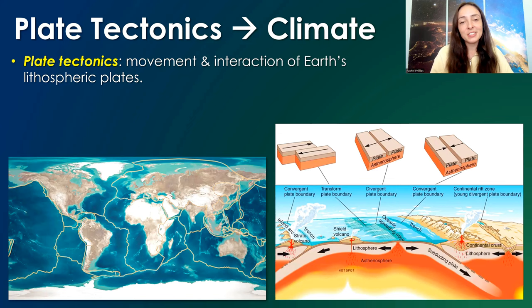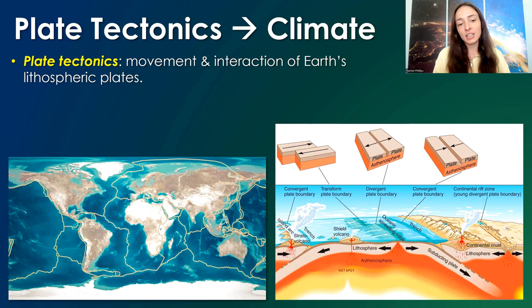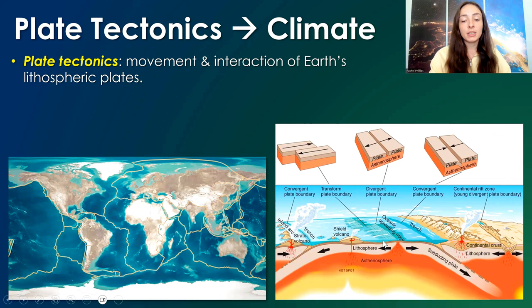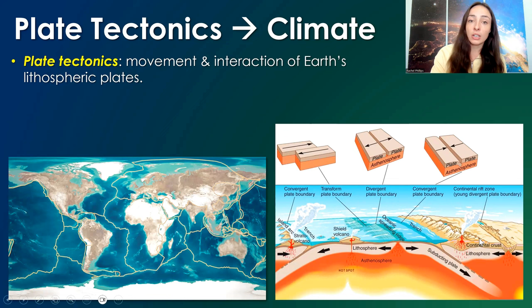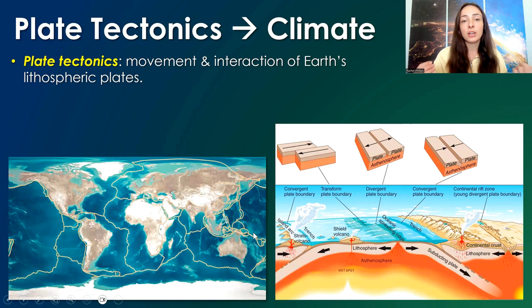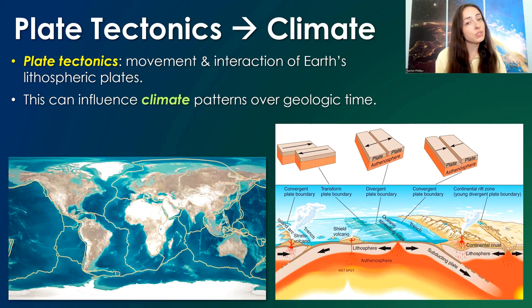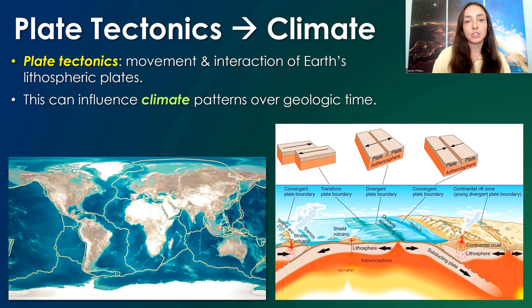Starting with the very basics, what is plate tectonics? Plate tectonics is the movement and interaction of Earth's lithospheric plates. The lithosphere includes Earth's crust but also part of the uppermost mantle — the lithosphere is what makes up the actual tectonic plates. Lithosphere that includes oceanic crust is denser and behaves differently than lithosphere that includes continental crust, which is less dense and typically overrides oceanic plates that subduct underneath continental crust. All the lithospheric plates on Earth interact and push and pull against each other, and these interactions can affect climate over geologic time.